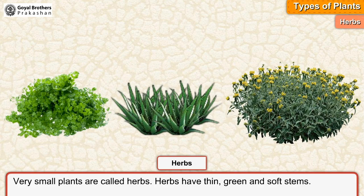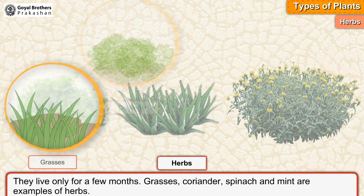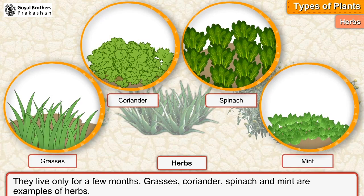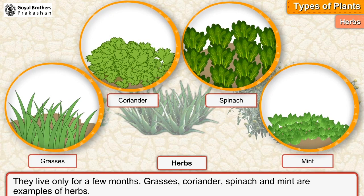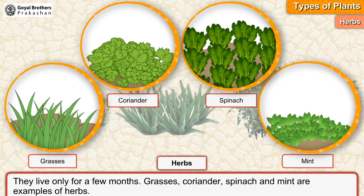Very small plants are called herbs. Herbs have thin, green, and soft stems. They live only for a few months. Coriander, spinach, and mint are examples of herbs.